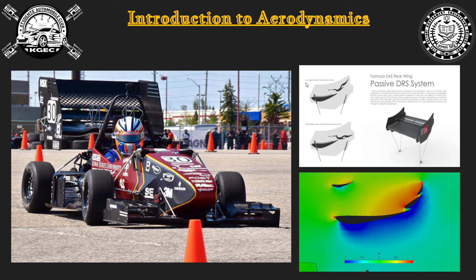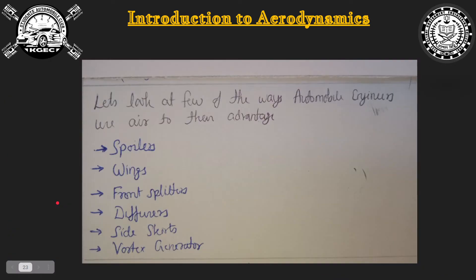As discussed, this is the high pressure region as seen in the CFD diagram — the inverted airfoil has a high pressure region here and a low pressure region here, and this creates a downforce at the rear wheel that creates traction. Now let's look at the front splitter.